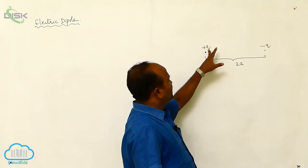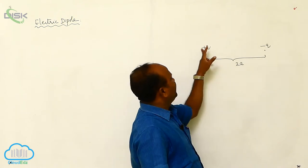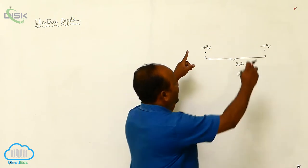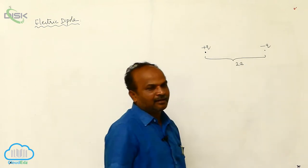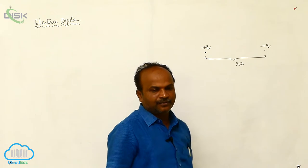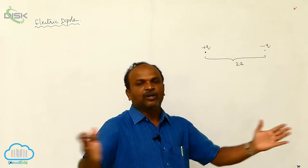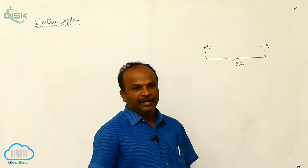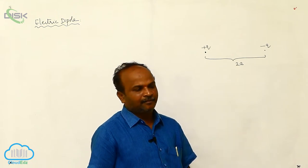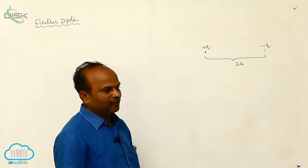Here we can see these are the two charges — equal and opposite charges — and they are at a fixed separation. Because of the attractive force they tend to come closer, but to prevent them from coming closer, they are maintained at a fixed separation. Such an arrangement is called an electric dipole.